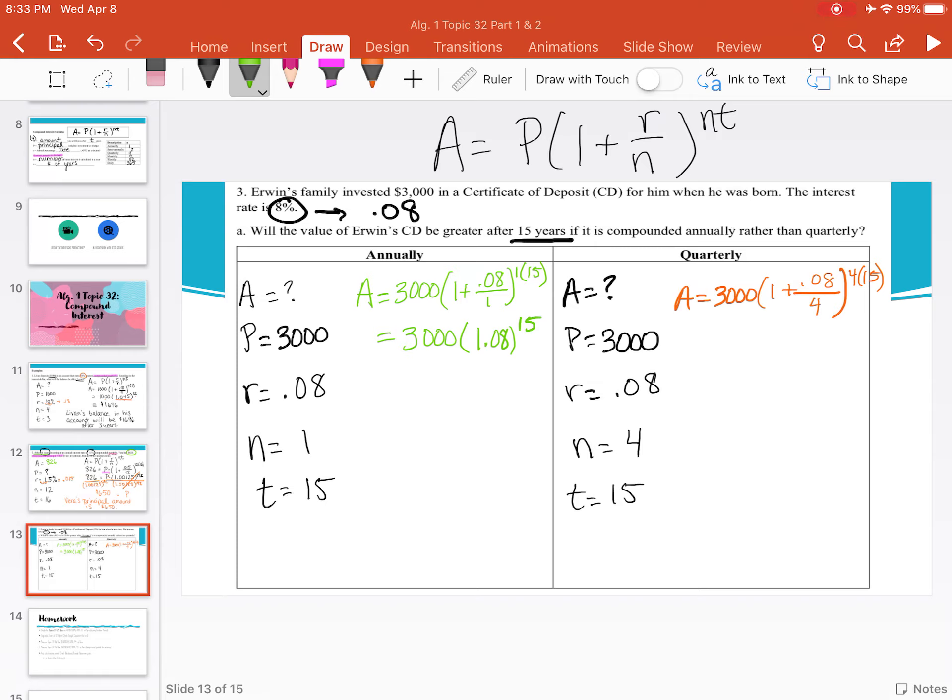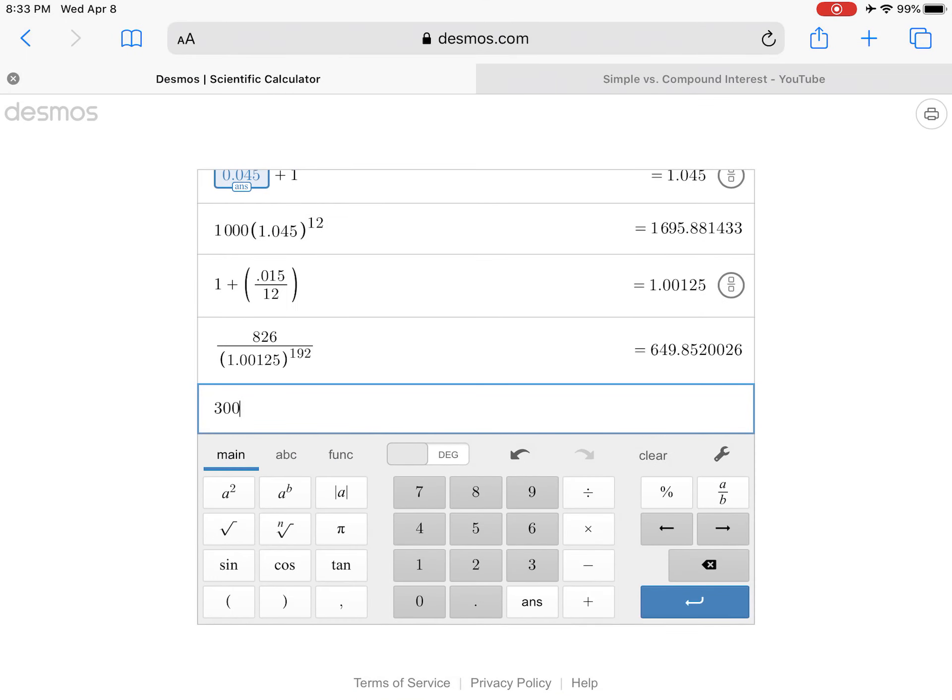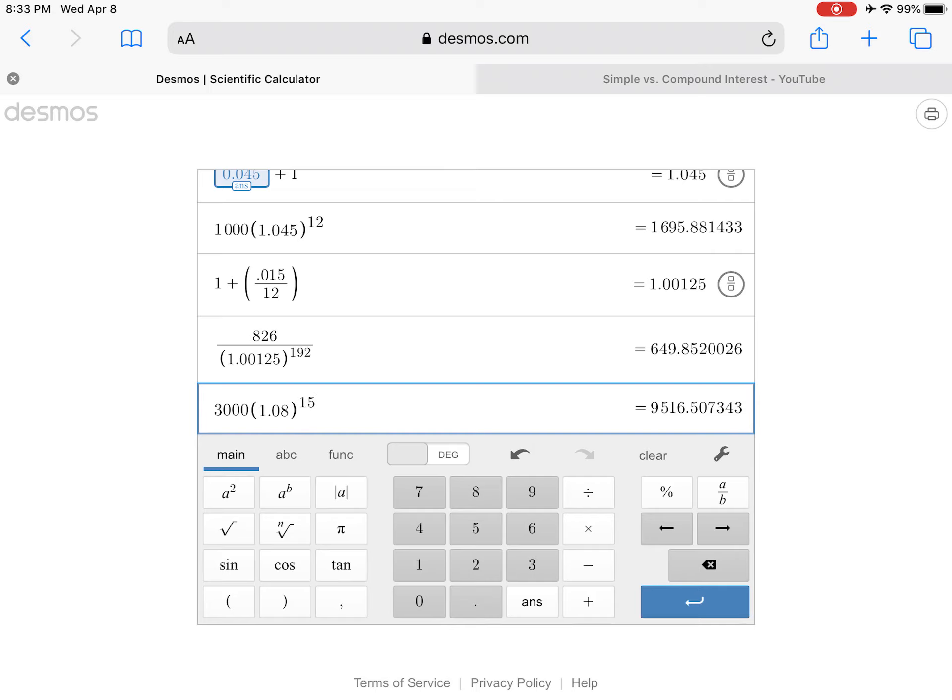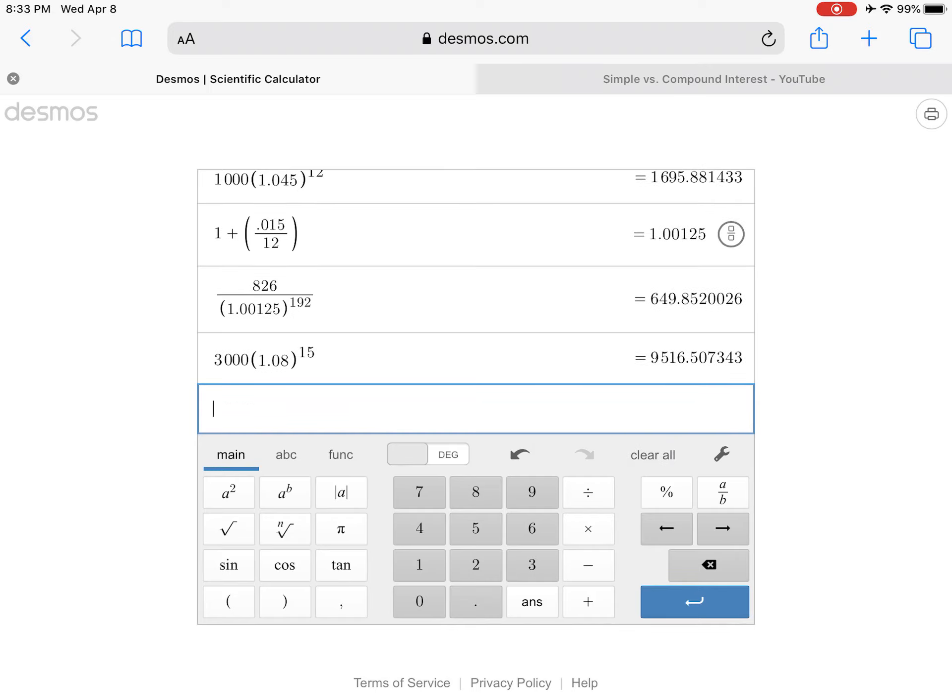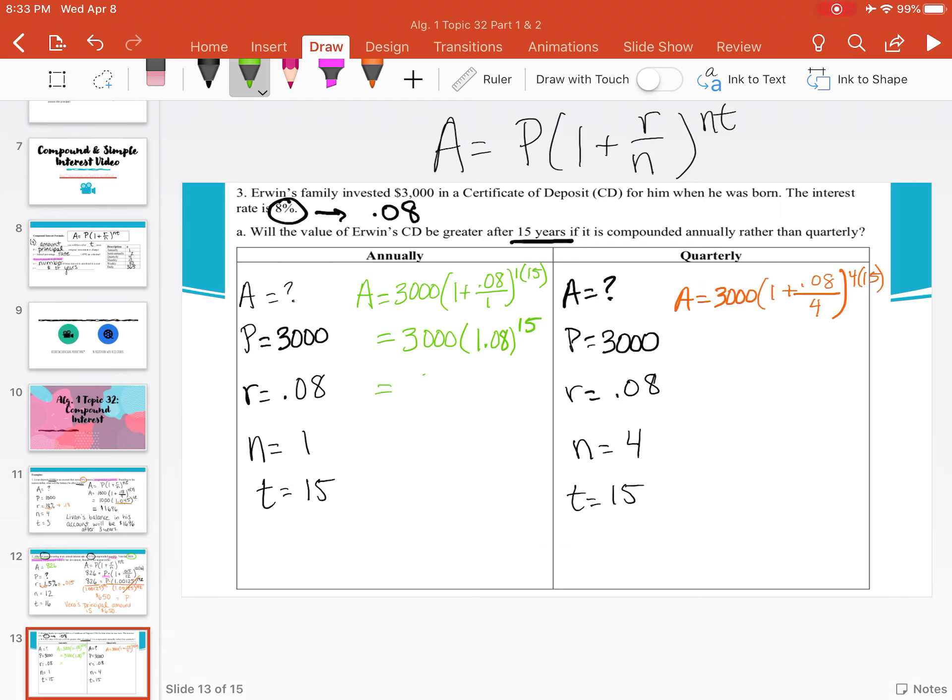That's it simplified on the left hand side. Now if we go ahead and evaluate it, we have 3000 times 1.08 raised to the 15th power. And we have $9,516.51. This problem didn't say to round, so we're just going to use the hundredth place because we're dealing with money. So we get $9,516.51 if it's compounded annually.